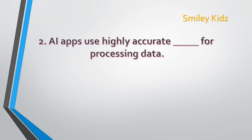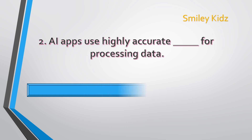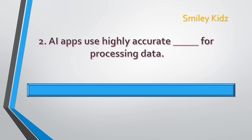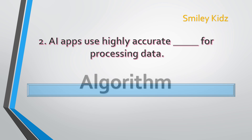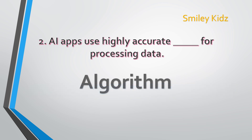Question number 2. AI apps use highly accurate dash for processing data. Your time starts now. Your time is up. The correct answer is algorithm. AI apps use highly accurate algorithms for processing data.